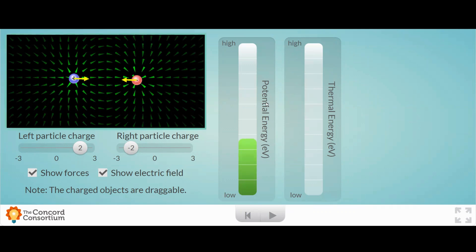And as we move it around, we see changes in the potential energy, and then there's also a bar graph for the thermal energy. Notice the units for both of those are in electron volts.